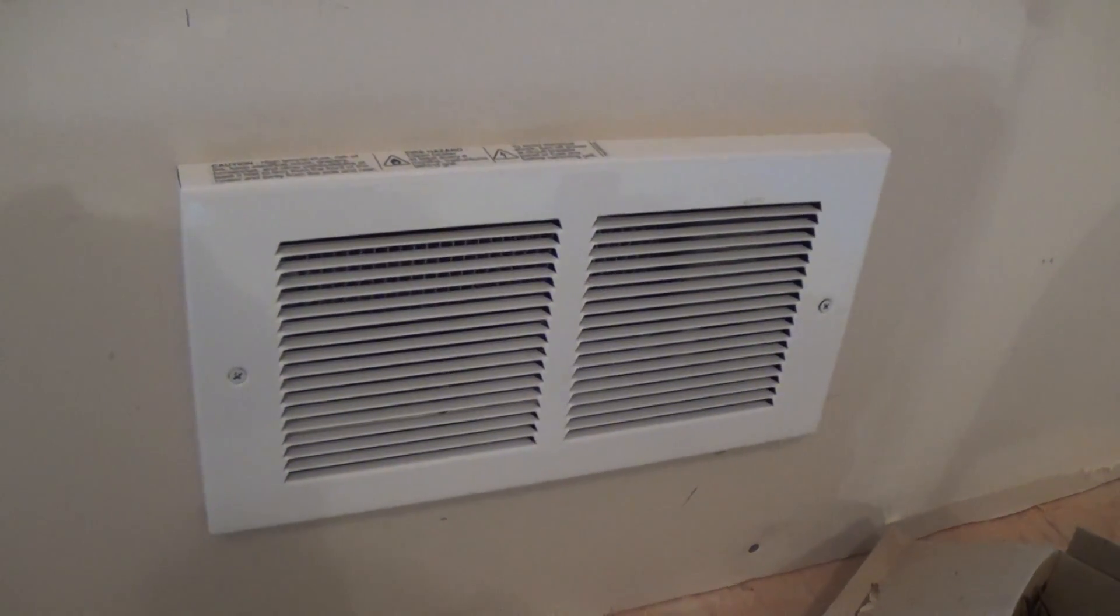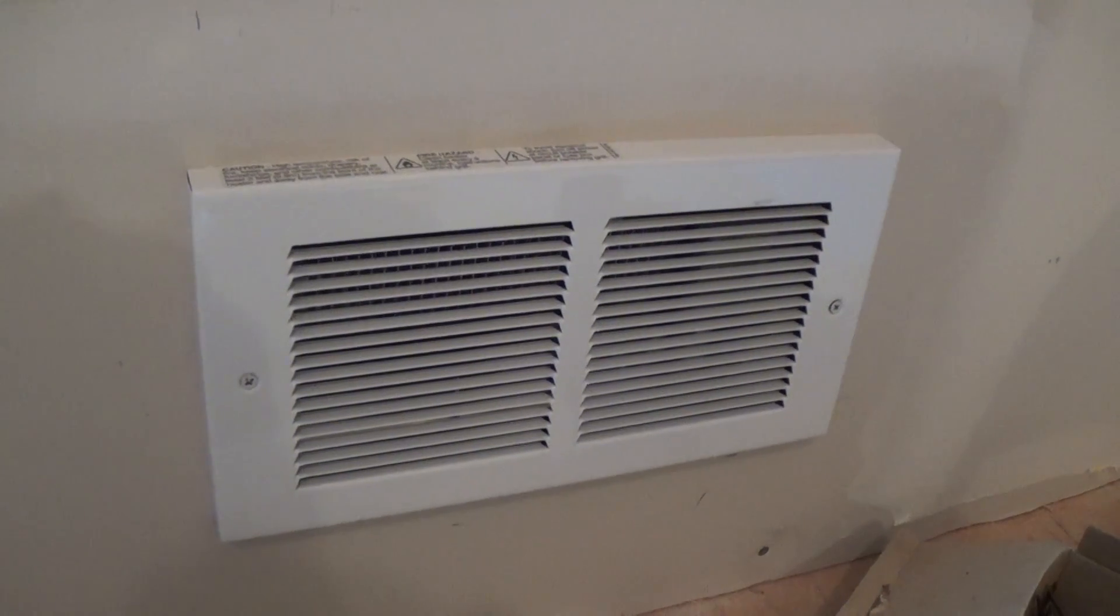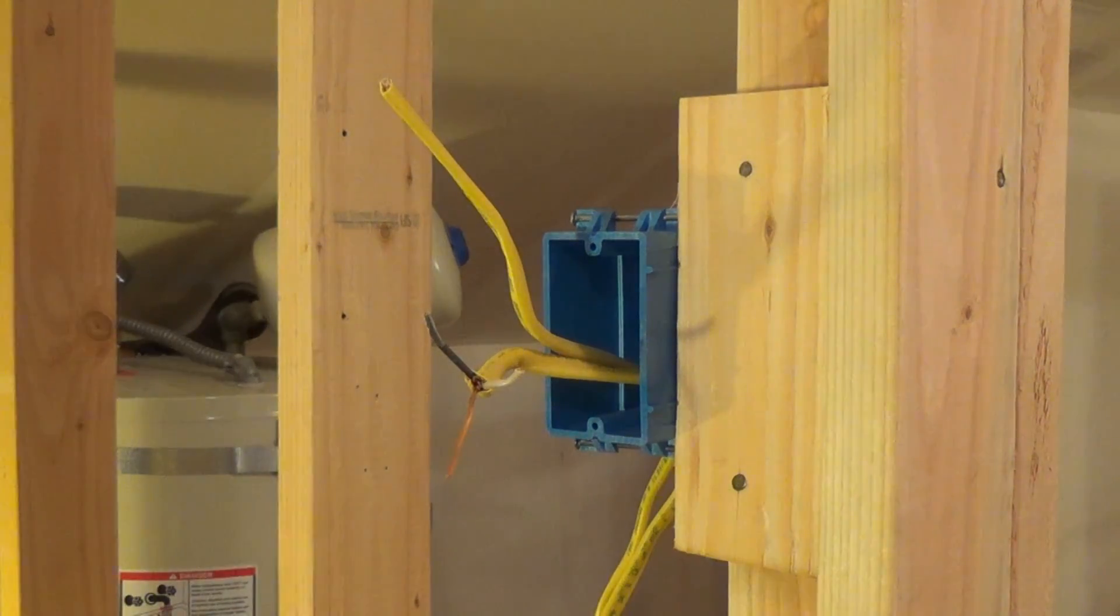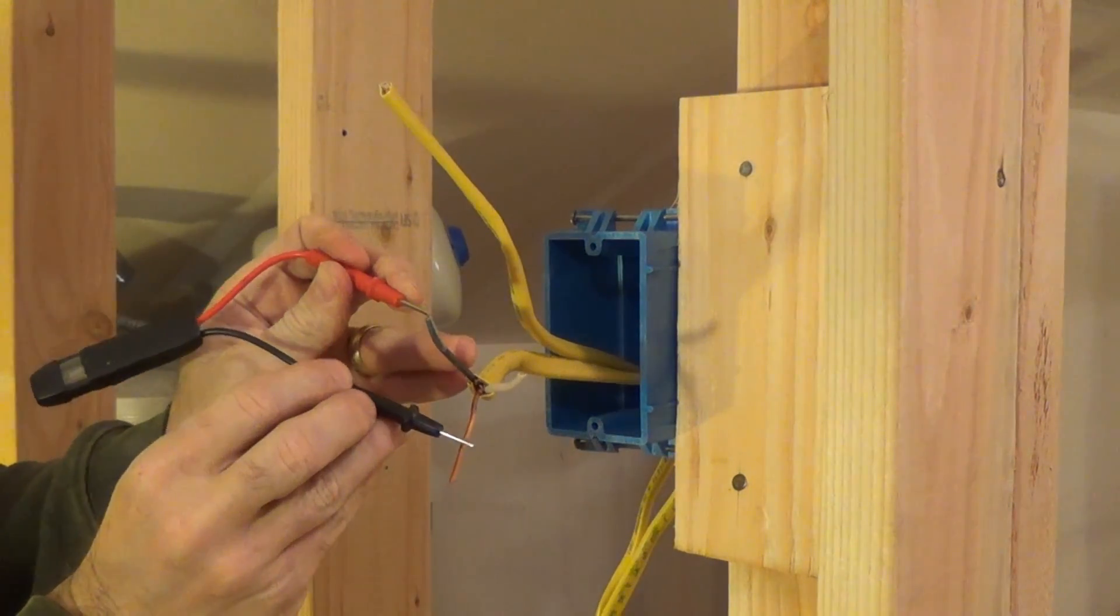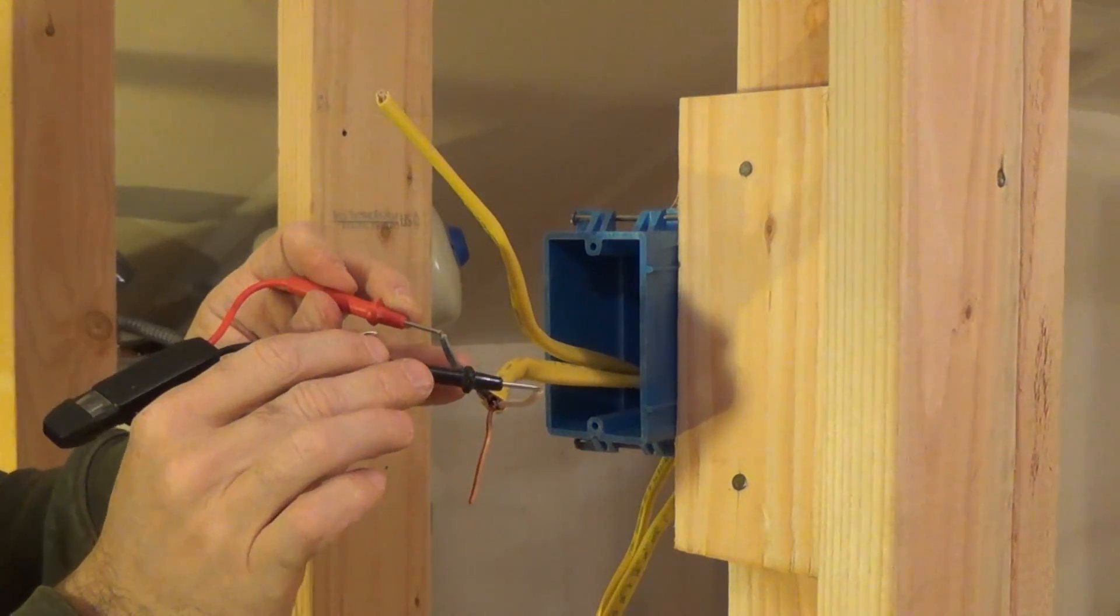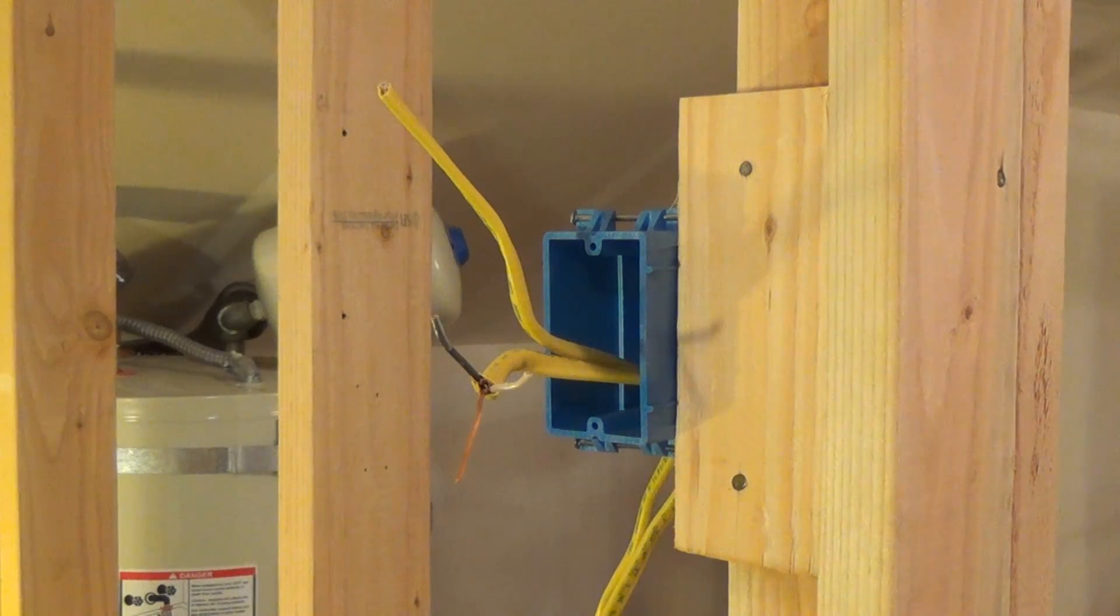And here's the cadet heater, at least one of them that will hopefully be powered by the thermostat. So the first thing I'm going to do is verify that I do have the breaker off. I just want to verify that there's definitely no power coming into this and nope there is not.